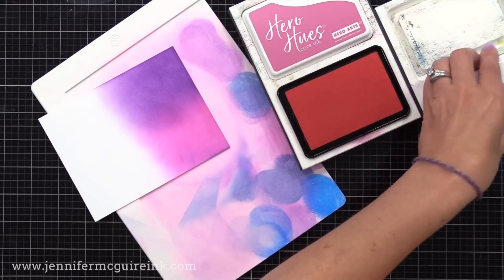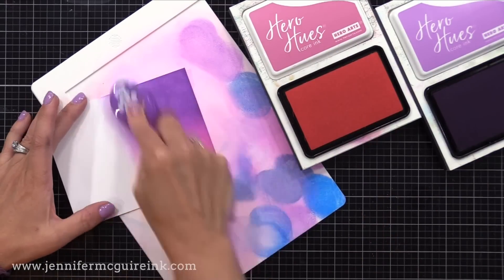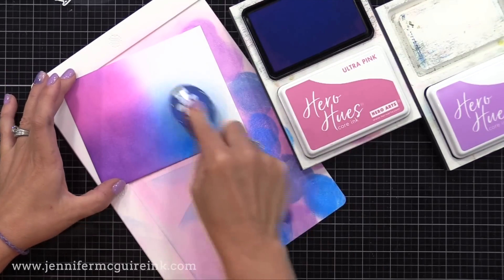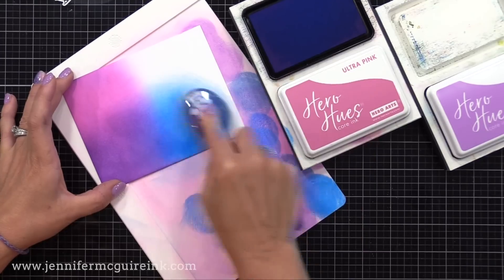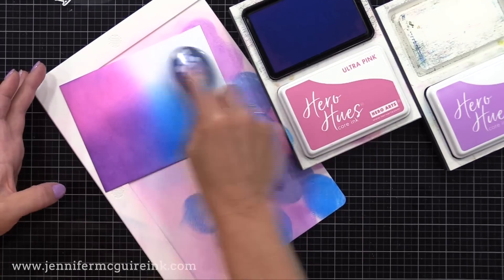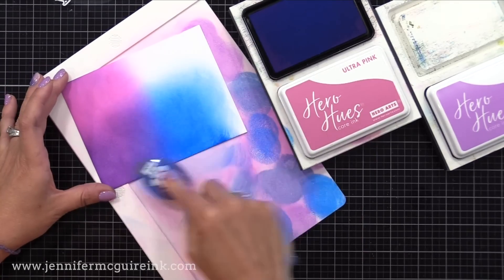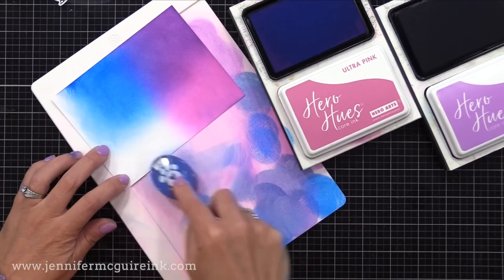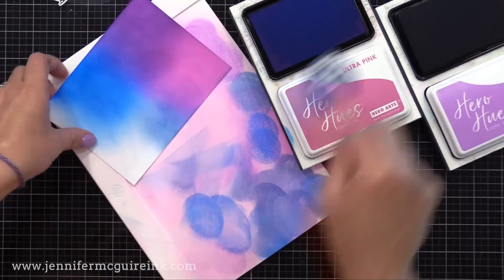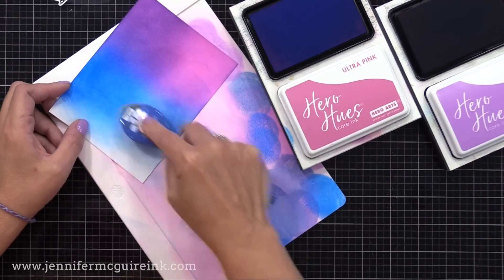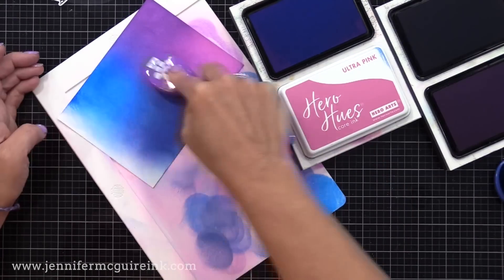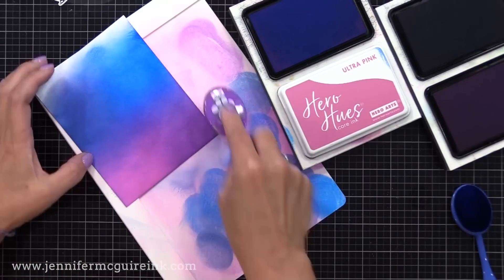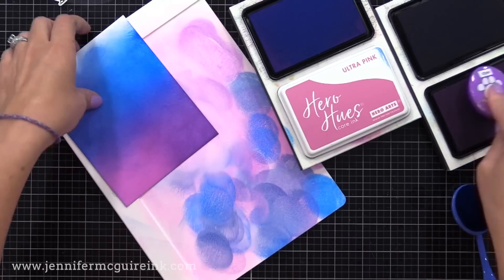So what I do for blending is I kind of start in the corner and start with a light hand, and then I keep building up the ink. I've put Orchid and Ultra Pink down on the bottom half, doing kind of the half purple, half pink, and then above that, I'm doing two colors of blue, Summer Sky and Stone Wash, kind of doing half one color, half the other.